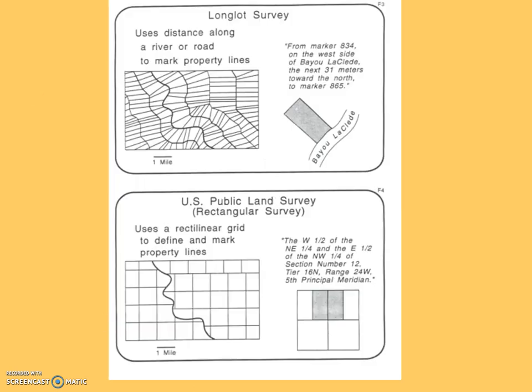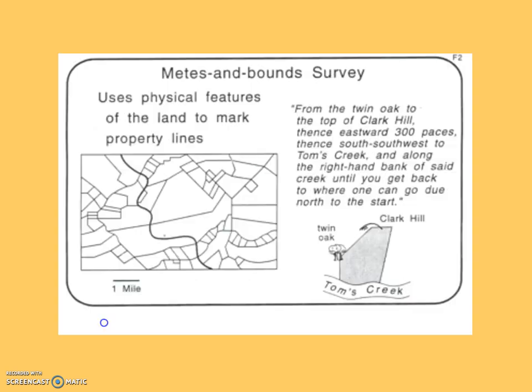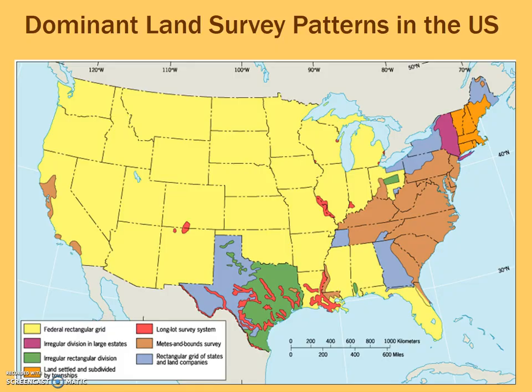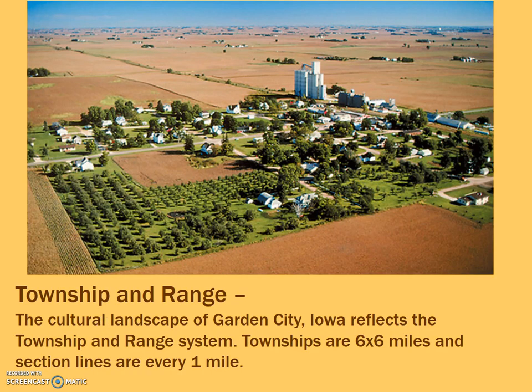These are some images: the top one would be more what you'd see in the long lot survey, the bottom would be the rectangular or township and range, and then there's metes and bounds. This is a really good map showing you where you might find the different types of survey systems in the United States. The majority will be rectangular or township and range. From an aerial photograph it's very obvious — you can see the big squares on the land.